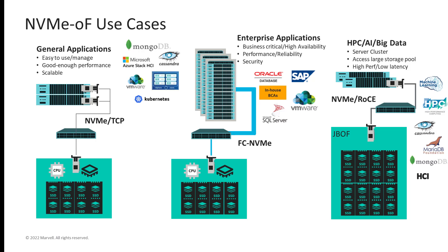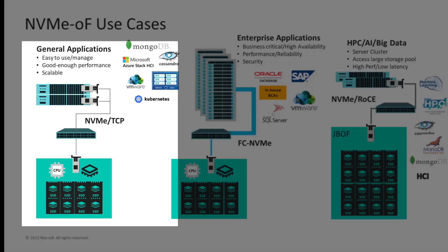Here are the use cases for NVMe over fabrics. NVMe over fabrics will become commonplace from SMB to the enterprise to connect application servers to shared storage arrays. For general purpose business applications, customers can use iSCSI today on standard Ethernet networks for its ease of use and good-enough performance characteristics. In the future, the same customers will migrate to NVMe over TCP to connect to next-generation NVMe storage arrays.